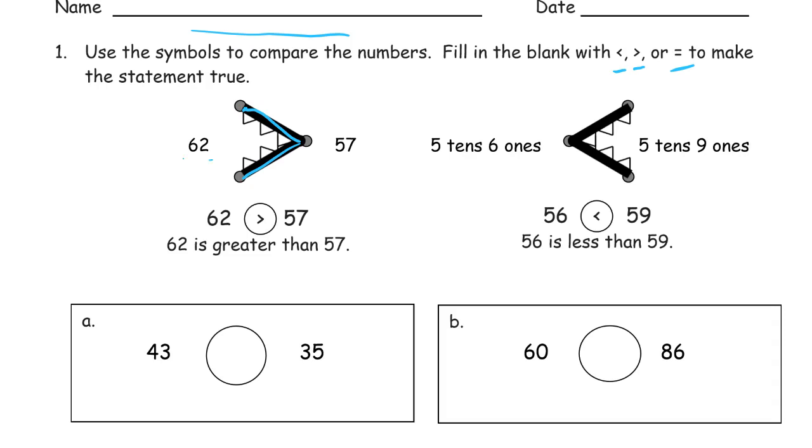So if you've got a 62 here and a 57, that hungry alligator is going to want to eat the 62, not the 57. So the mouth is going to chomp it that way. And looking at 5 tens 6 ones, or 5 tens 9 ones, you're going to look at just regular form instead of unit form, and they'll be easier to compare.